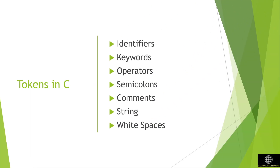C tokens are the basic building blocks in C language, which are constructed together to write a C program. Each and every smallest individual unit in a C program is known as a C token. C tokens are the smallest elements of a program which are meaningful to the compiler.